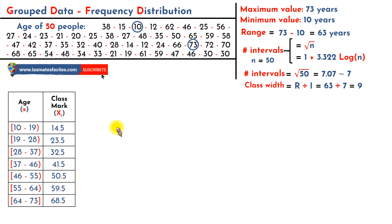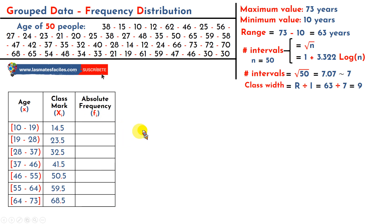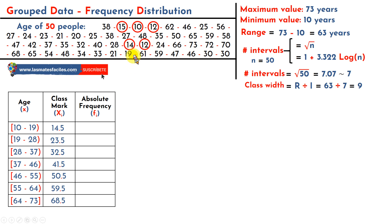Now let's move on to the next column: the absolute frequency. The absolute frequency is simply counting. How many people are between 10 and 19 years old — not counting 19? Here we have 5 people. The ones who are 19 are not counted in this interval; the 19 is counted in the next interval. I put 5 here.